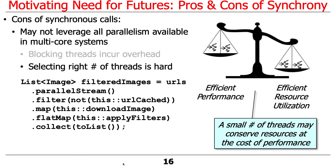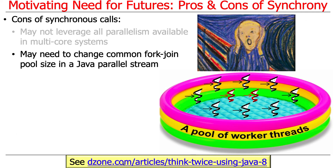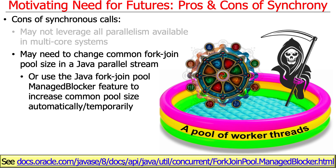Alternatively, minimizing the number of threads gives you efficient resource utilization, but then you have a bunch of cores sitting around not being used properly. We've talked about various ways to handle this — setting properties, using managed blockers — but it's tricky, particularly for IO-bound programs where you need more threads to run efficiently. There are lots of tricky things you need to do, and it's particularly hard if you're not familiar with tricks like changing the size of the common fork-join pool.